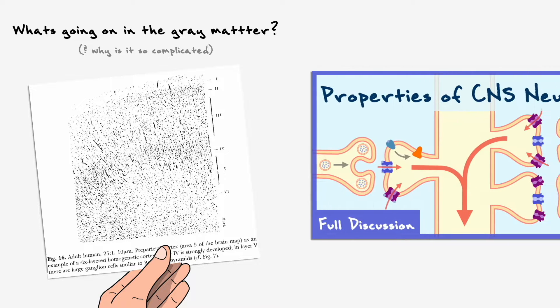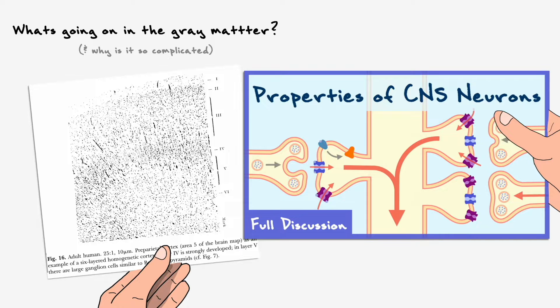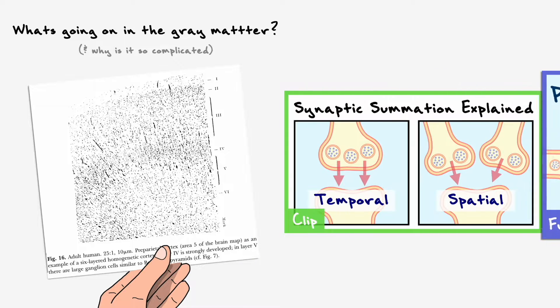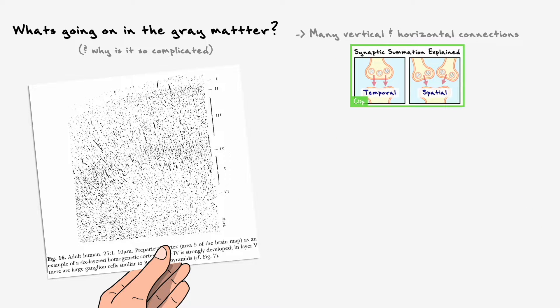If you are familiar with my discussions on the properties of neurons in the central nervous system, you might recall that a fundamental role of the neurons there is to integrate signals from the different inputs they receive via synaptic summation mechanisms. As such, you can imagine that all of the cell bodies that you see on the left receive and give connections to nearby neurons in the horizontal and vertical axis.